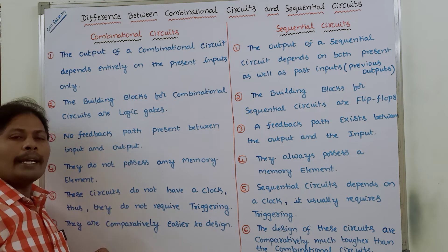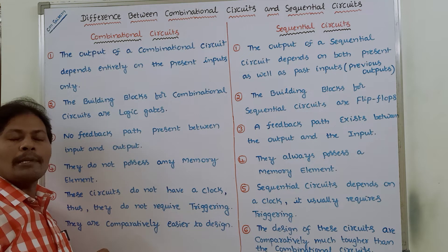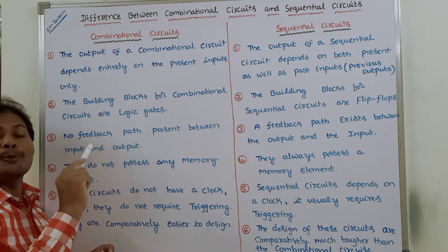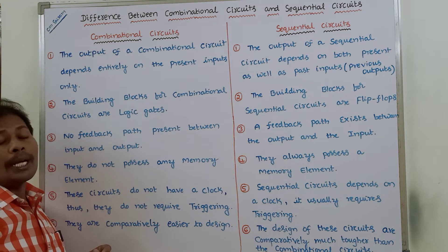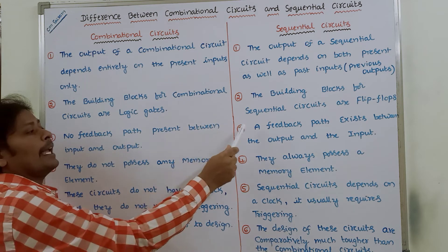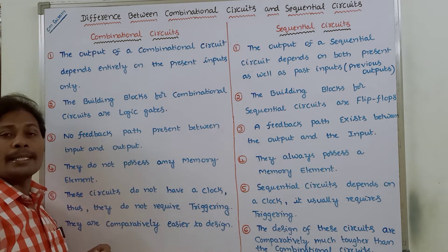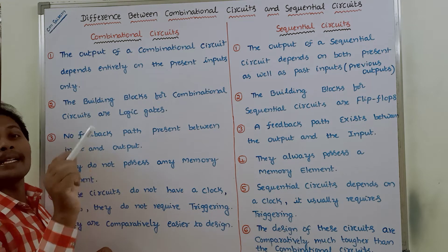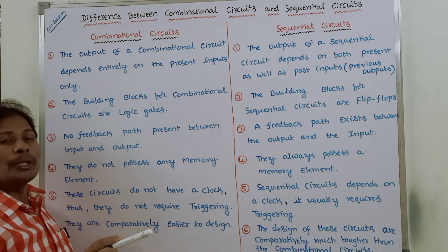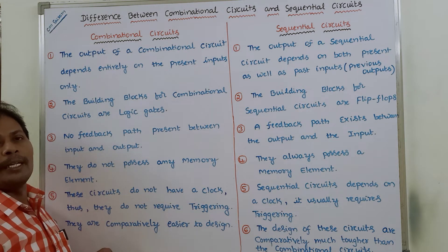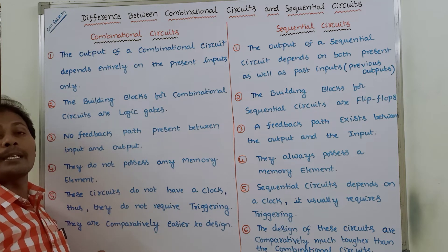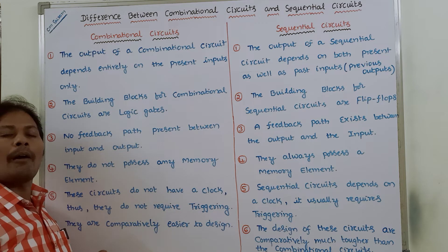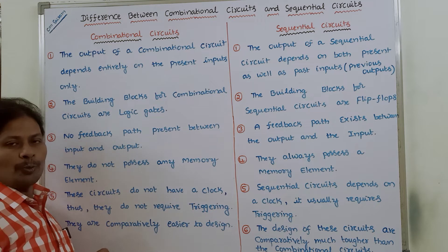Third point: no feedback path is present between input and output in a combinational circuit — there is no feedback connection between the output and input. Whereas in a sequential circuit, a feedback path exists between output and input, which is why sequential circuits depend not only on the present inputs but also on the past inputs, i.e., previous outputs.